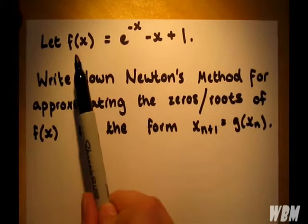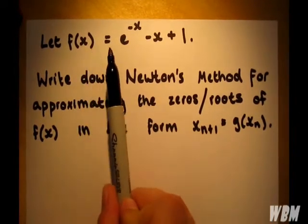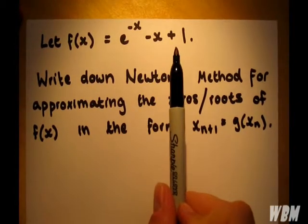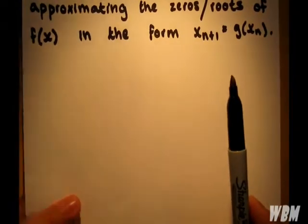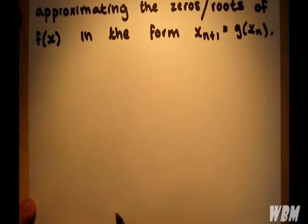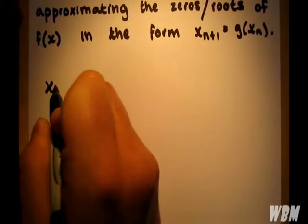The function we're given is f(x) = e^(-x) - x + 1. Obviously, the key part of writing down Newton's method is Newton's method itself, and this is what it is.